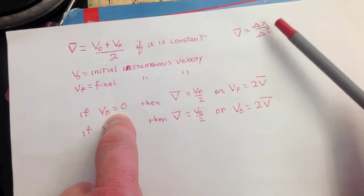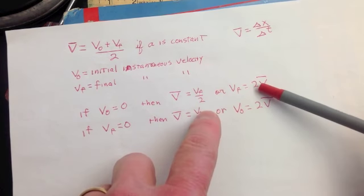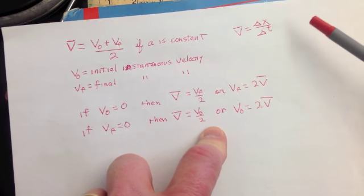Don't make that mistake. Make sure you use the time from when you started. And that gives me my V-bar. Then I just multiply that by two to find my final velocity.